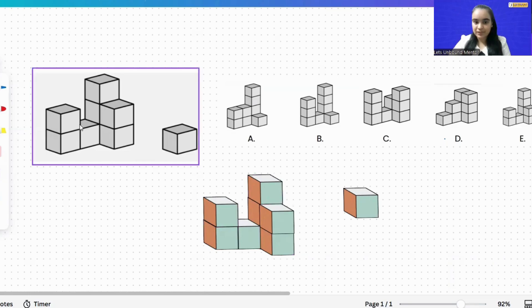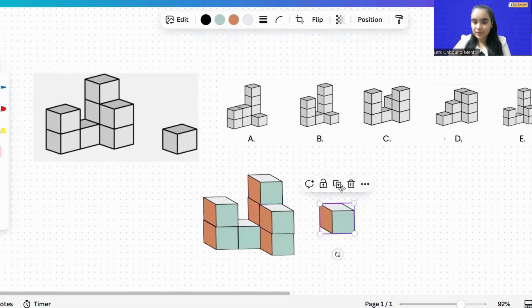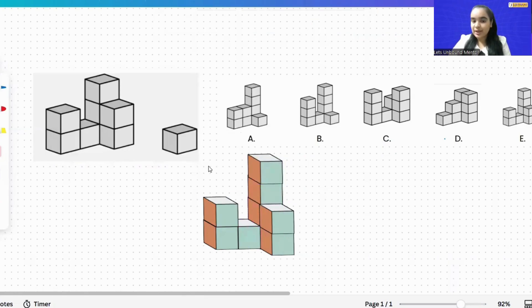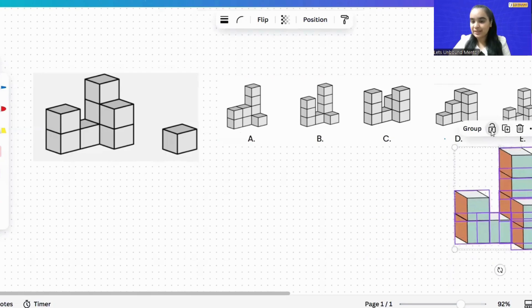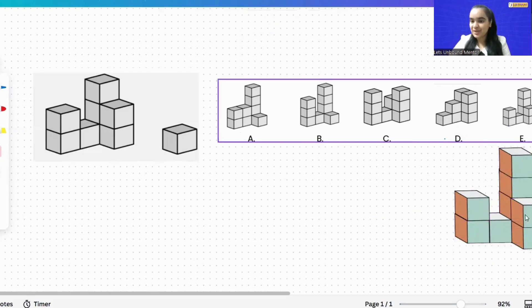So this is how the figure looks like, and this is the block which we have to place. Now if I'm going to keep this block over here, we get option E as the correct answer. It looks very similar.